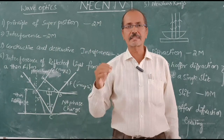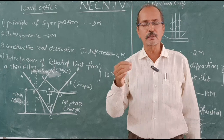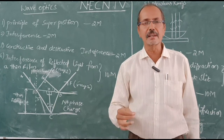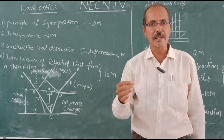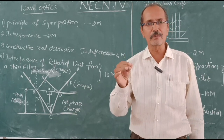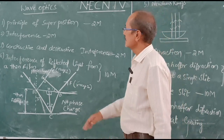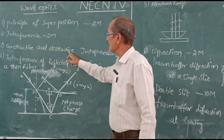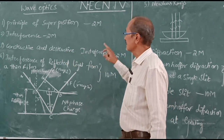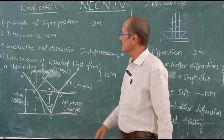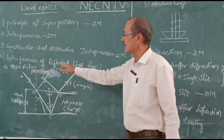Next is interference. What is interference? The phenomenon of modification in the distribution of intensity in the region of superposition of waves is known as interference. This question is important for two marks. Next is constructive and destructive interference, which are also important for two marks.